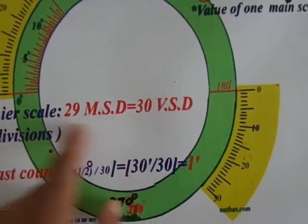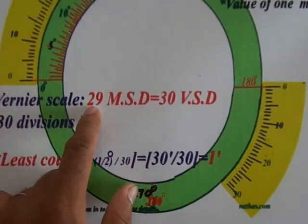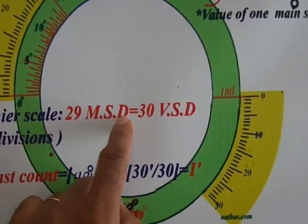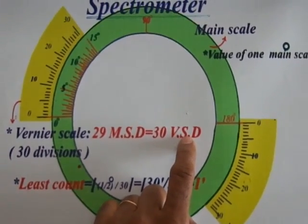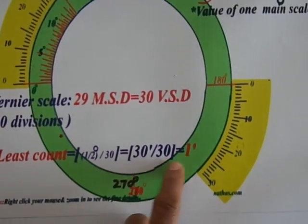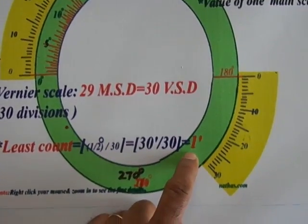The design of the device is in this manner. The vernier scale is designed in this manner so that 29 main scale divisions equals 30 vernier scale divisions. So the least count is calculated, it is one minute.